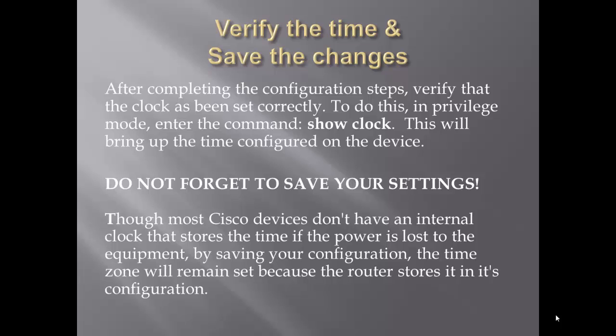After completing the configuration steps, verify that the clock has been set correctly. To do this, in privilege mode, enter the command show clock. This will bring up the time configured on the device. Don't forget to save your settings. Though most Cisco devices don't have an internal clock that stores the time when power is lost, by saving your configuration, the time zone will remain set because the router stores it in its configuration.